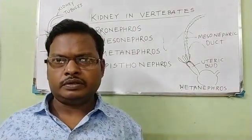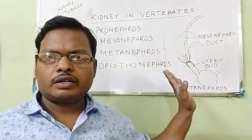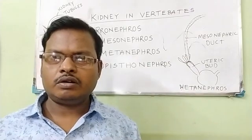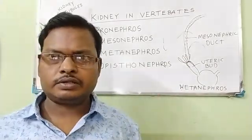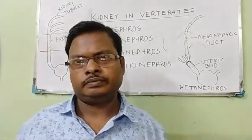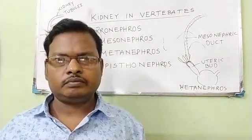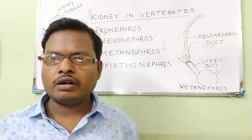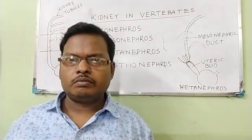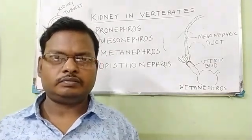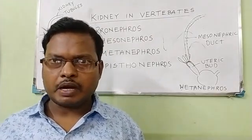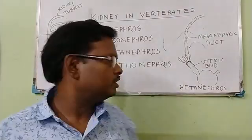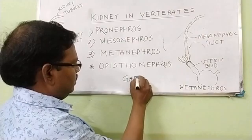In males, the Wolffian duct carries sperm, and in females, the Müllerian duct — the modified Mesonephros duct — carries eggs. In mammals, the posterior part of the Mesonephros duct serves as the vagina for internal fertilization. The region of the Mesonephros duct modified for reception of spermatozoa in females is called Gartner's duct (G-A-R-T-N-E-R).